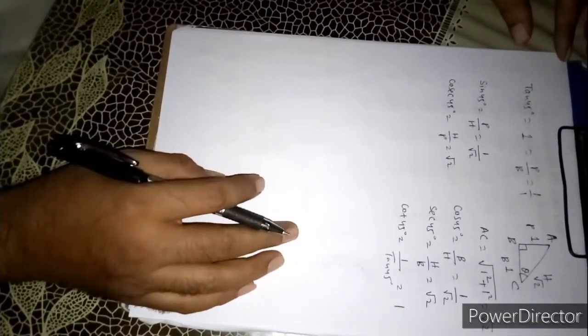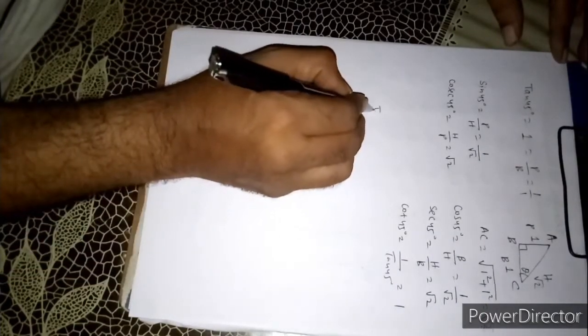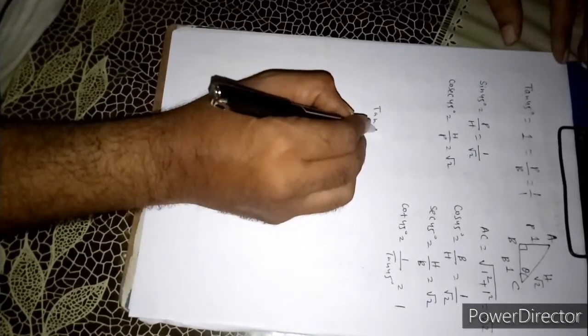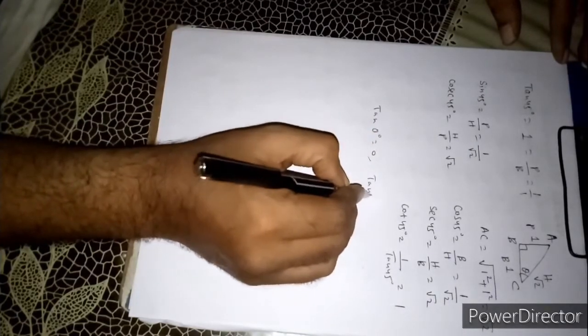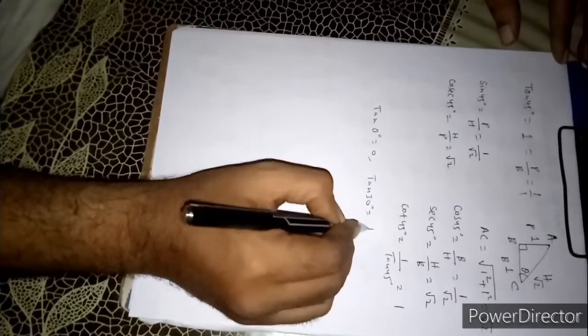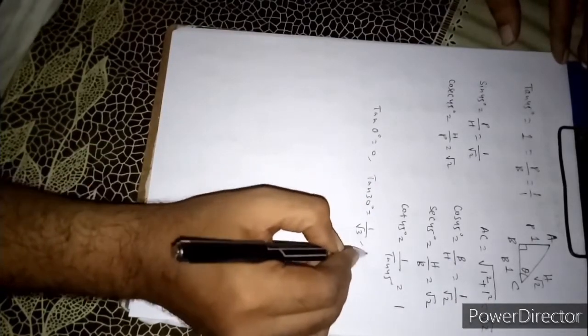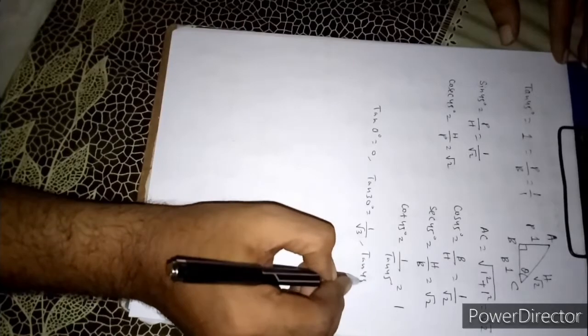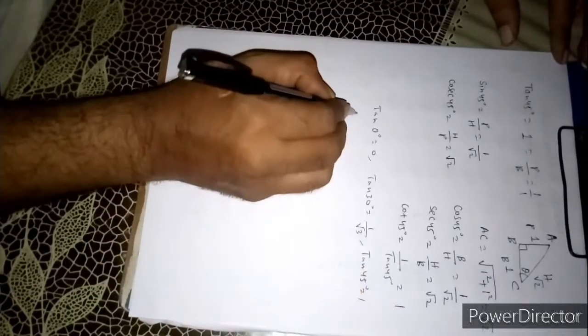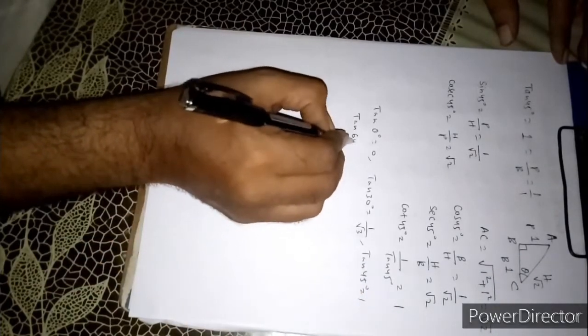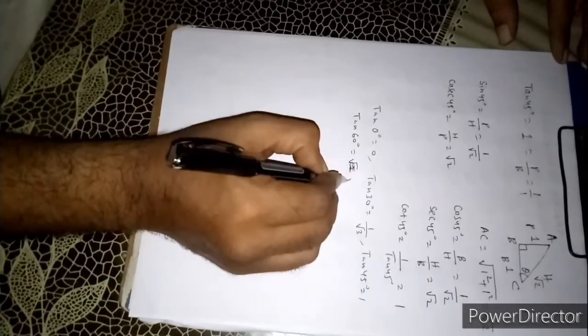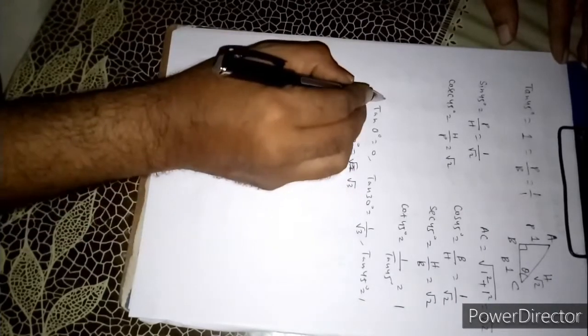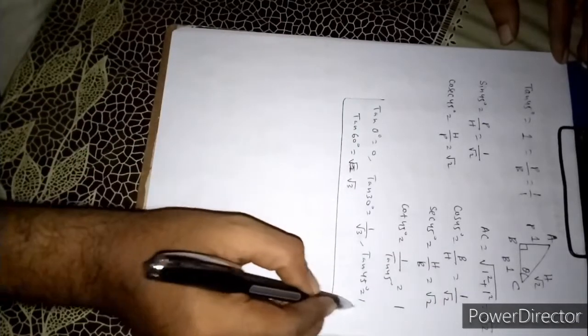In this way if I simply know the value of tan: tan 0 is 0, tan 30 is 1 by root 3, tan 45 is 1, tan 60 is root 3. If we can know only these values, we can easily find the other trigonometric ratios.